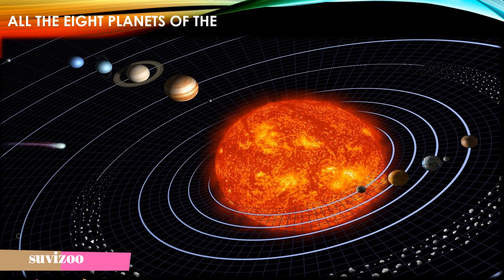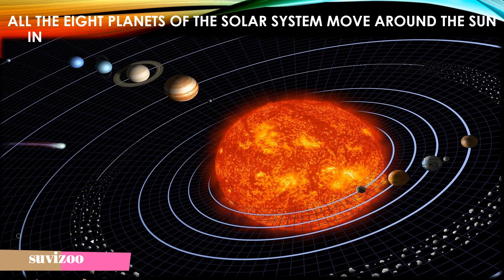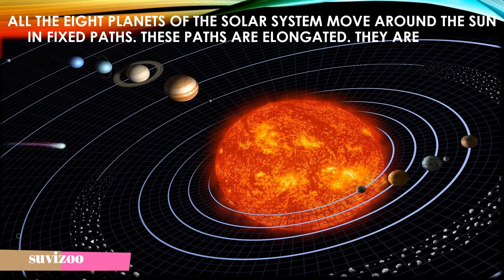All eight planets of the solar system move around the sun in fixed paths. These paths are elongated and they are called orbits. Here in the image you can see the white circular lines — those are the orbits of the planets shown here.